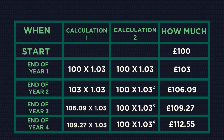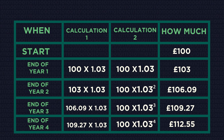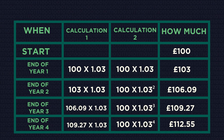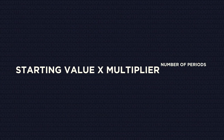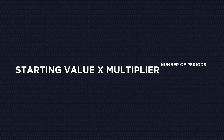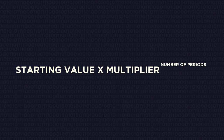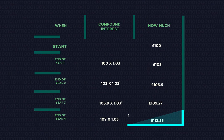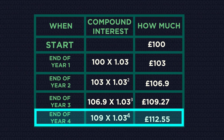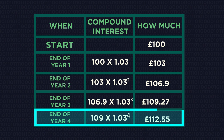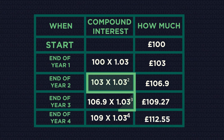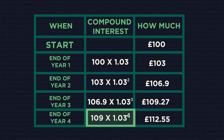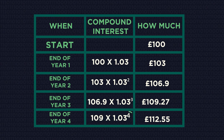Can you see what's happening to the multiplier? You just need to count how many times the interest has compounded and make this number the power. So at the end of year four, the interest has compounded one, two, three, four times — so the power is four.